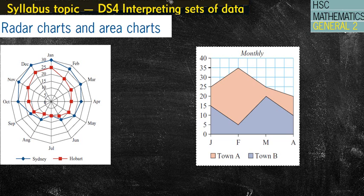First of all, radar charts — on the left hand side here — kind of look like a spiderweb. They're pretty easy to read most of the time. We don't often get questions where you're asked to draw these out. In the textbook we'll show you how to draw them, but I'm not going to bother because it just doesn't happen.